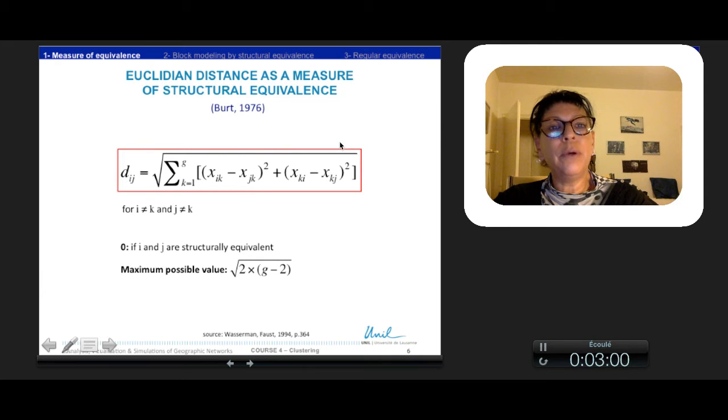For example, Bert introduced in 1976 the Euclidean distance to measure structural equivalence between two nodes i and g. It depends to their own relation with every k nodes of the graph making the sum of the two directions. So we have the difference between i k and j k but also k i and k j. The maximum possible value corresponds to the total opposition between nodes i and j relations. The minimum occurs when they are structurally equivalent.